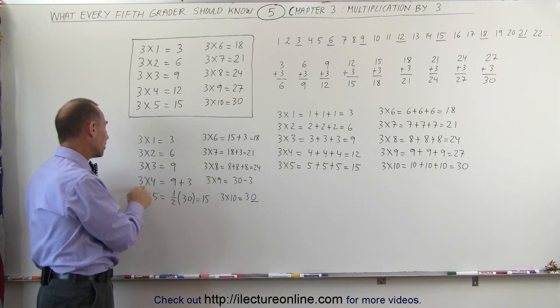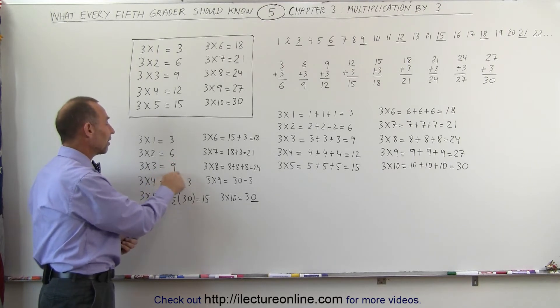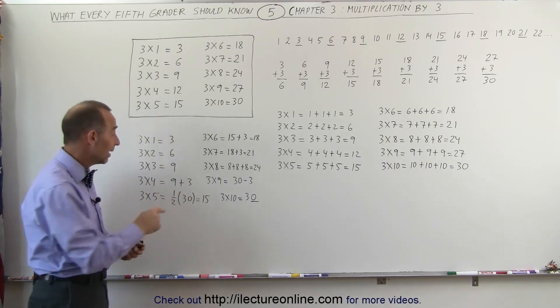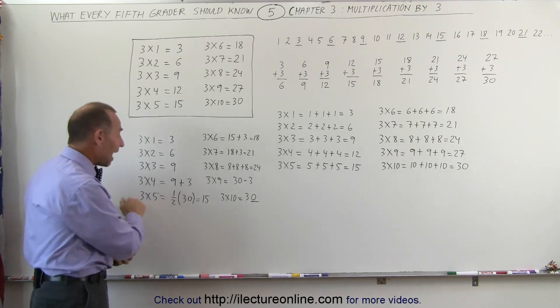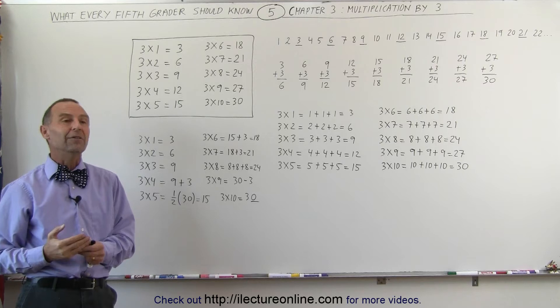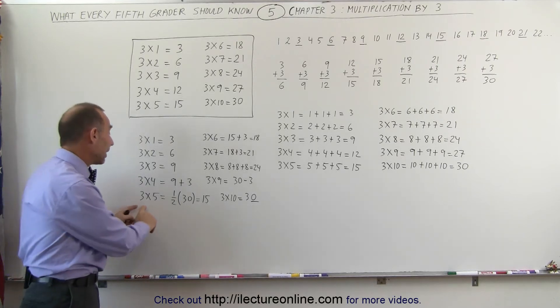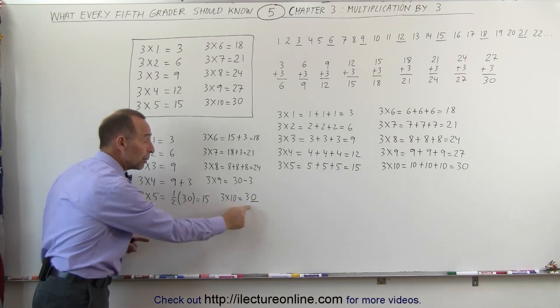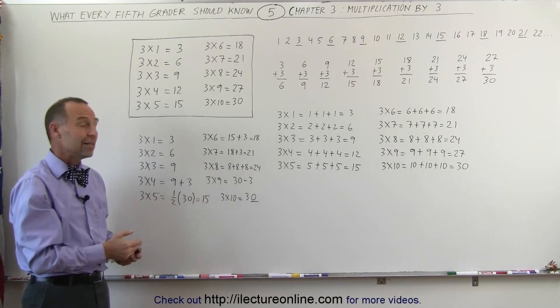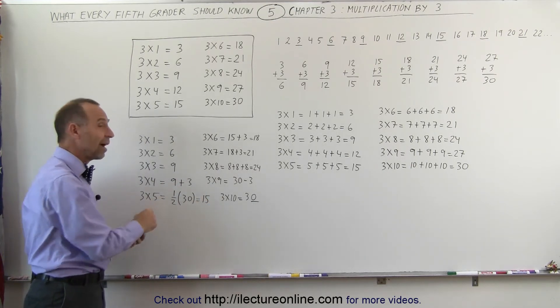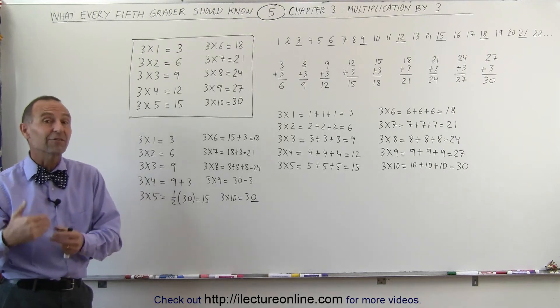And then if you go to the next one, 3 times 4, grab the previous answer of 3 times 3, which is 9, and simply add 3 to it, you get 12. Then when you get to the halfway point, 3 times 5, well you should know that 3 times 10 is simply a 3 with a 0 added to it, that's 30. Take half of that, you get 15. So another way of looking at 3 times 5 is the same as saying 3 times 10 divided by 2.